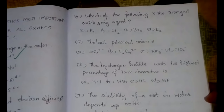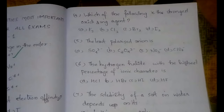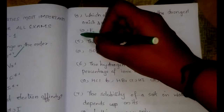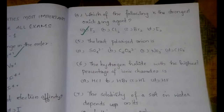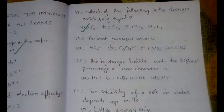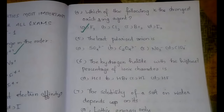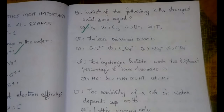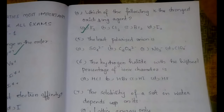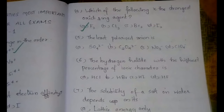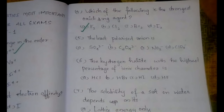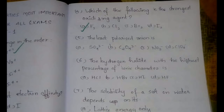The fourth question: which of the following is the strongest oxidizing agent? The strongest oxidizing agent means it will be getting reduced quickly. The strongest oxidizing agent would be F2. This is a repeated question for all exams including government exams, so learn it by heart.